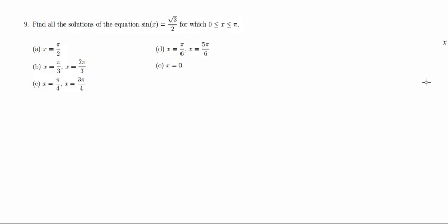Hey guys, welcome back. So now we're working on number 9, and number 9 says find all the solutions of the equation sine of x equals root 3 over 2, for which 0 is less than or equal to x is less than or equal to pi.